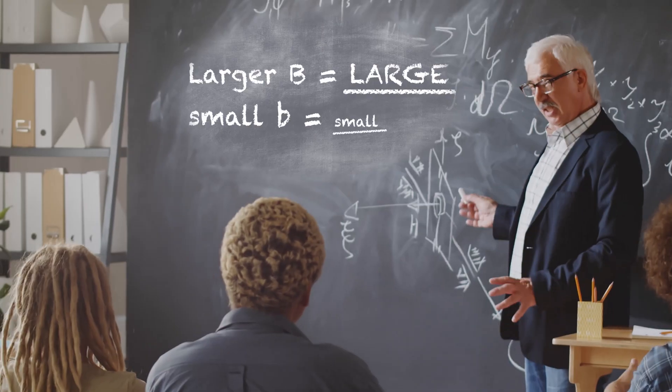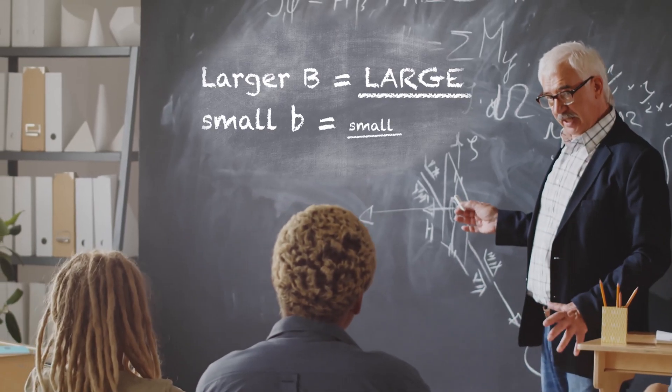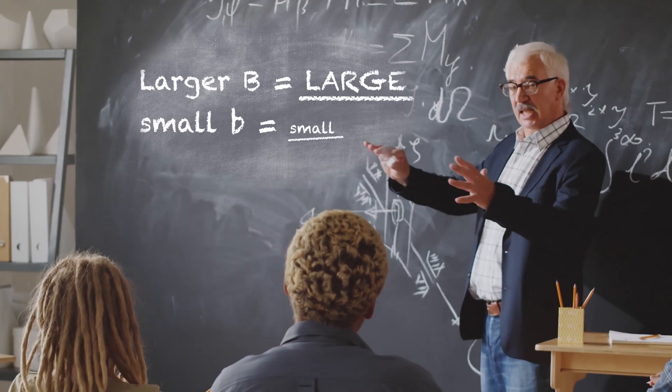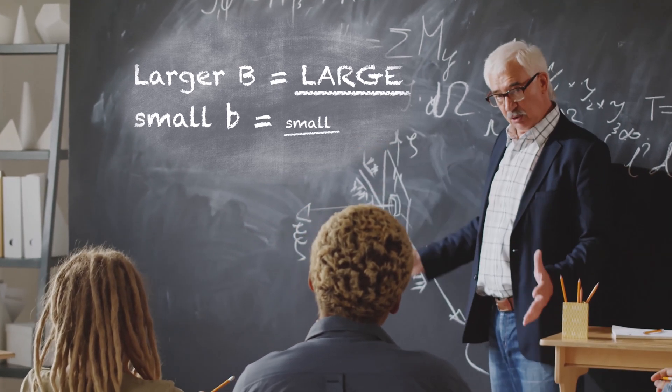Since internet speeds are normally measured in megabits per second, this can get rather confusing for folks unfamiliar with the smallest units of data measurement. Just think: larger B, large; small b, small. Most memory is measured from here in bytes.